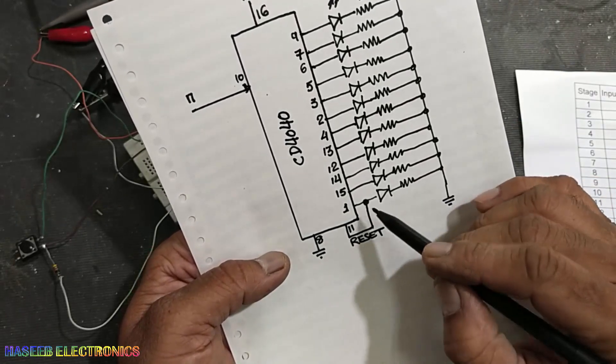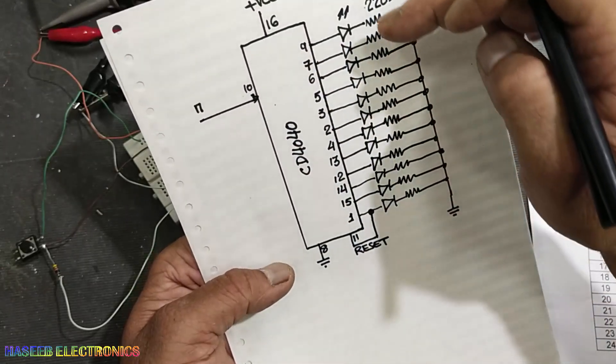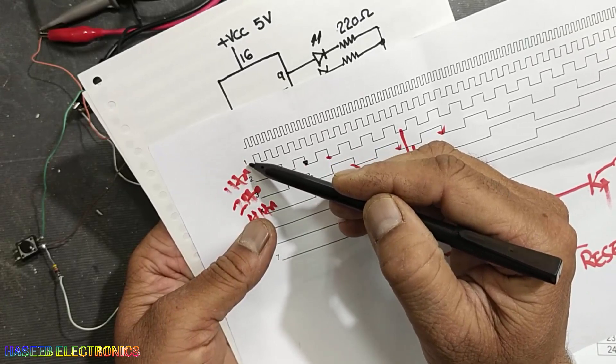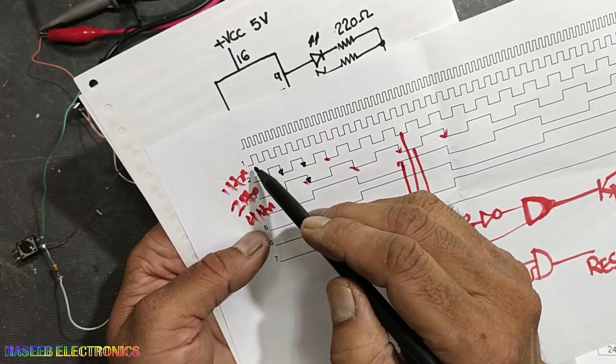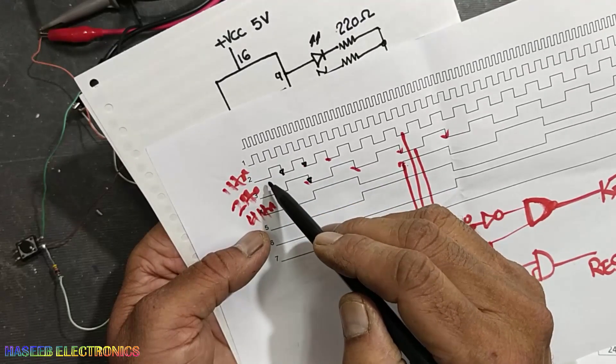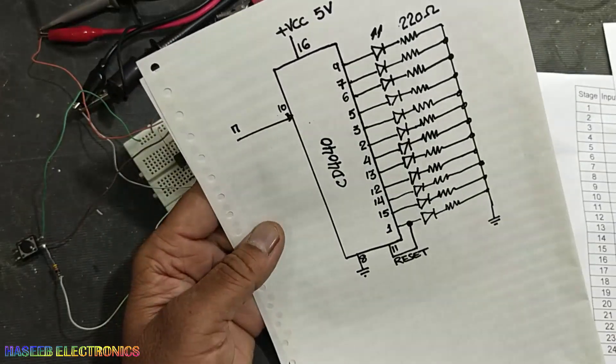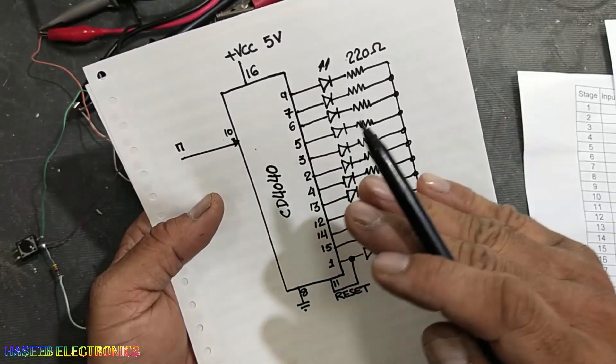As we see in the timing pulse, when all pulses are zero, at the first pulse trailing edge the first output will go high. The trailing edge of output number one will cause the next output to shuffle. So this is the working phenomena.